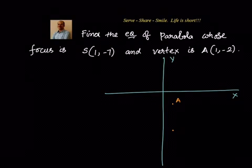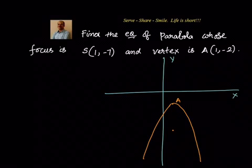From this we can see very clearly that this parabola will be opening downwards. This is how the parabola will look. We know the focus is at (1, -7) and the vertex is at (1, -2).